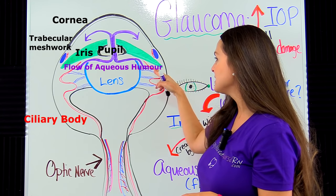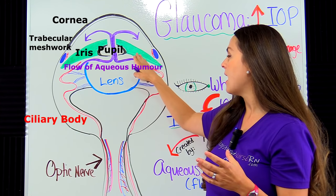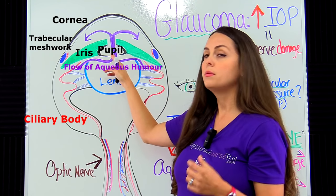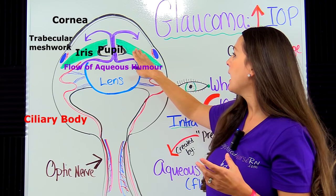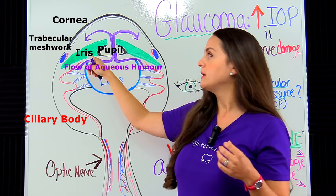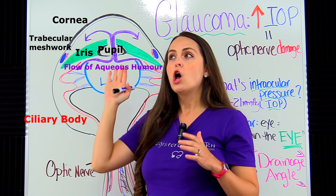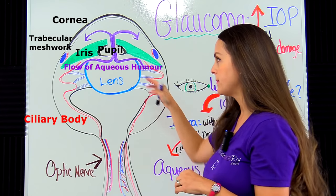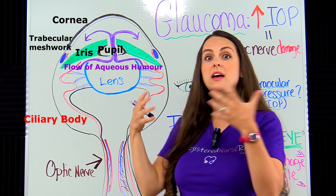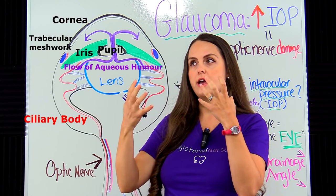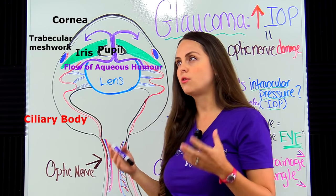The ciliary body produces the aqueous humor and it goes through the posterior chamber of the eye, found between the iris and the lens. Then this aqueous humor goes through the pupil opening and enters into the anterior chamber of the eye, which is found between the cornea and the iris. Then the aqueous humor goes down through the drainage angles of the eye, hitting the trabecular meshwork — which is like a strainer area — then into Schlemm's canal, and then the episcleral veins. That's how it normally drains out of the eye.